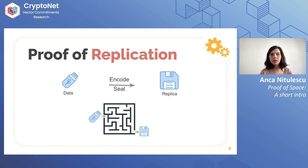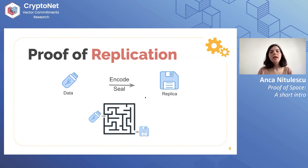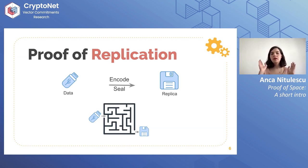The first step in this process is to take the data and encode it — what we call seal it — into a replica, which is another version of the data that is incompressible. To make sure that the storage provider is indeed dedicating that amount of space on their disk to the network, the data stored there should not be compressible. This encoding or sealing process is a very large computation that takes a lot of time. We can estimate exactly how long it takes, and we make sure it takes long enough that it's not possible to do it in the short period when you are challenged to show that you have a replica.